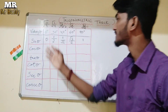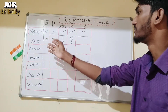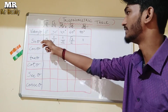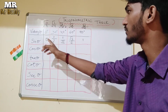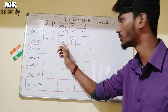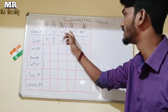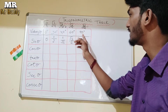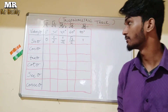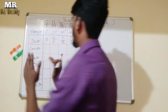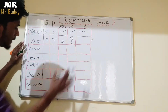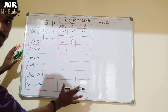So, the sinθ values are: sin 0° = 0, sin 30° = 1/2, sin 45° = 1/√2, sin 60° = √3/2, and sin 90° = 1. Using these sinθ values, you can calculate all the other trigonometric values.